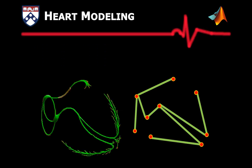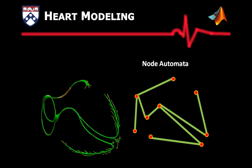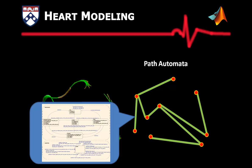The electrical conduction system of the heart is then modeled using a set of timed automata. We abstract the refractory property of the heart tissue using node automata, and the conduction delays between nodes using path automata.